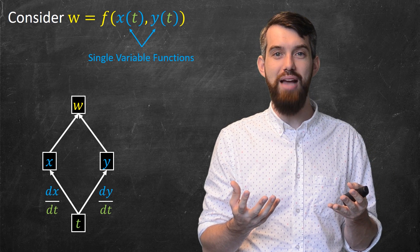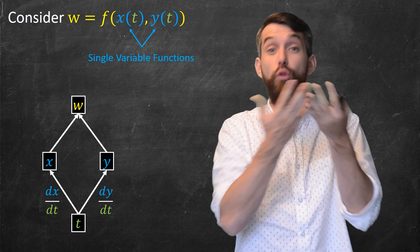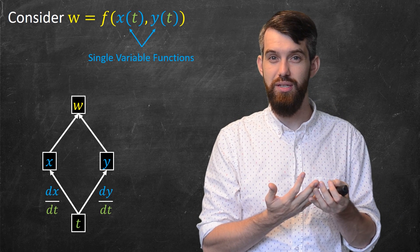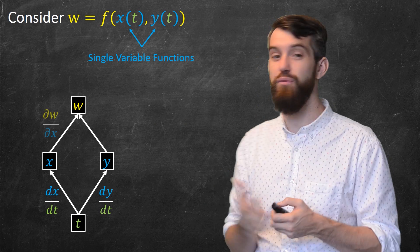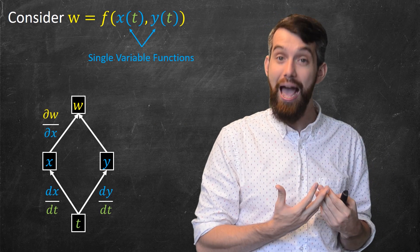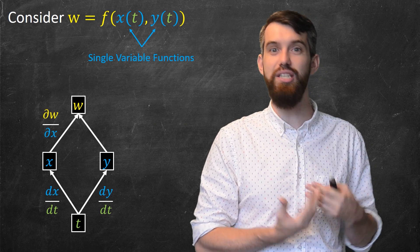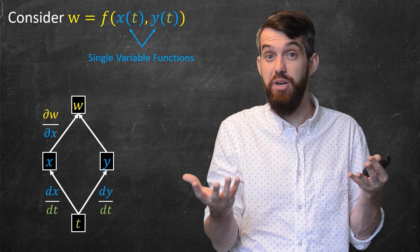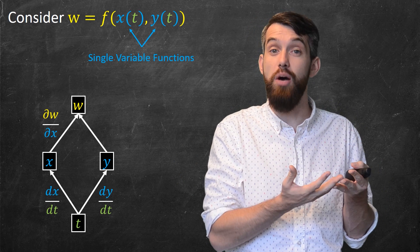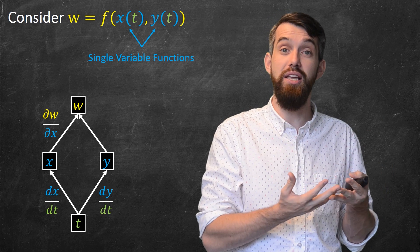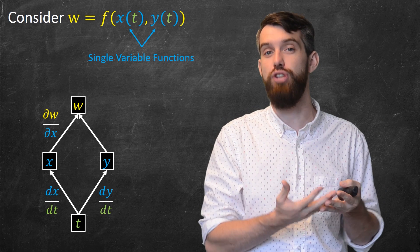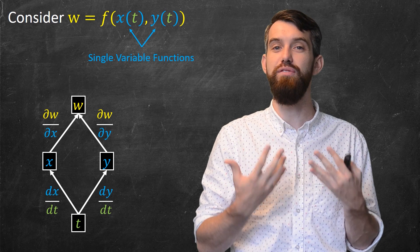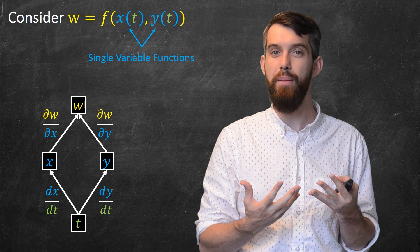Now let's look at the relationships between x and y going up to w. These are partial derivatives. There's a partial derivative which is the change in w with respect to x — you change x, which is only one of the multiple variables that w depends on, and ∂w/∂x gives you the rate of change of w as you change x. Likewise, ∂w/∂y tells you the rate of change of w with respect to y.